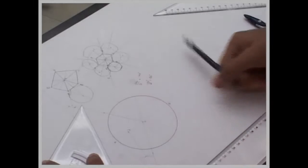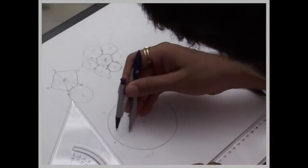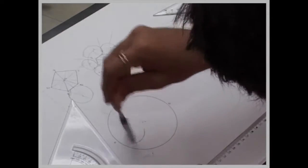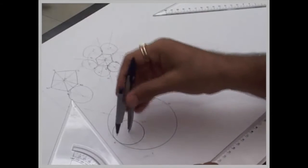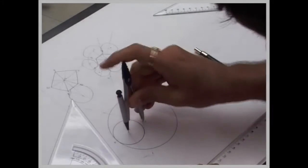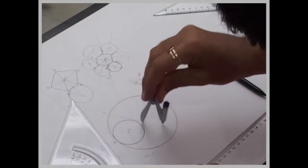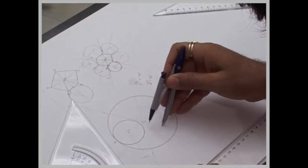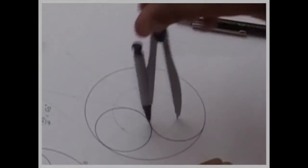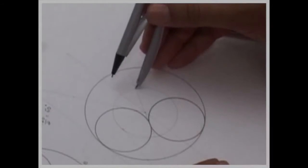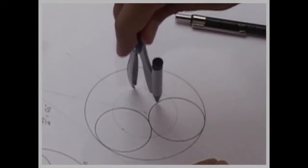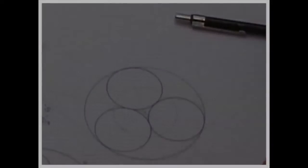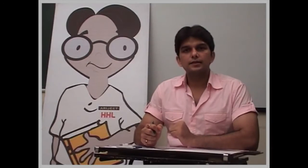Take 0 to 3, then take 3 to A. Drop and draw the circle. Now same way we take 0 to 3, take the same radius from here. Now we take 0 to 3 and take the same radius from here. So just now we drew 3 circles inside a circle.